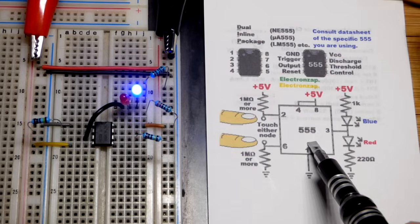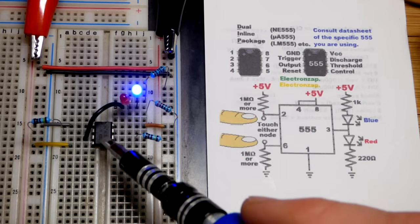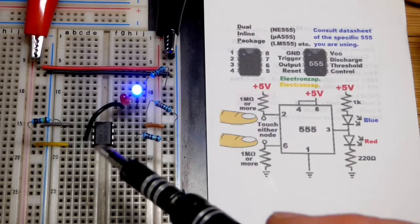So now, in this video, we got a 555 timer here that is wired so that you can change the output based on touch.